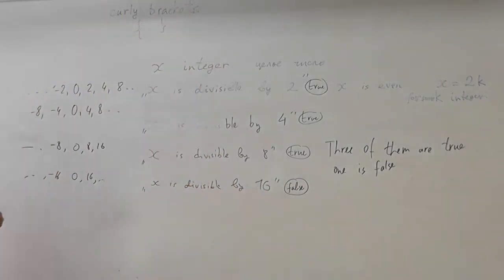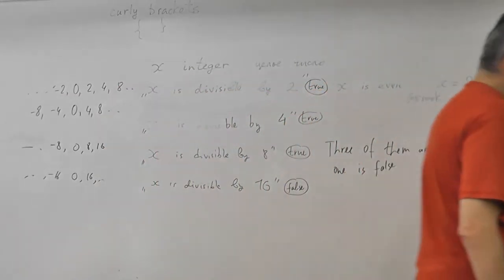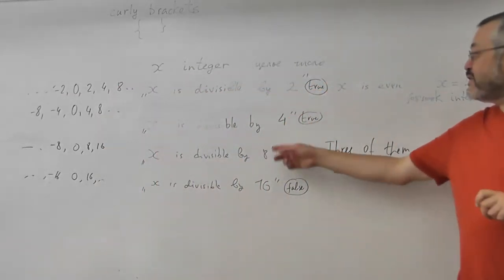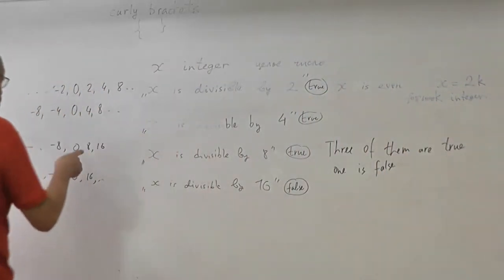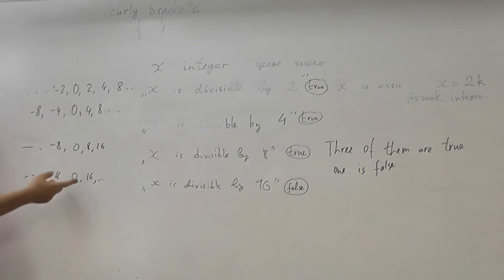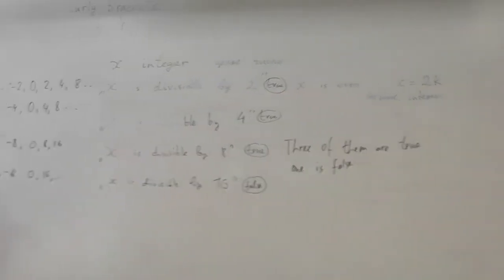If the number is divisible by sixteen, then it is divisible by eight, by four, by two. We see that any number which is divisible by sixteen is all the more divisible by eight. Well, simply the quotient will be twice as large, and the remainder is also zero. All the more it's divisible by four, and all the more it's divisible by two. But if it is divisible by eight, it is completely not necessary that it will be divisible by sixteen.